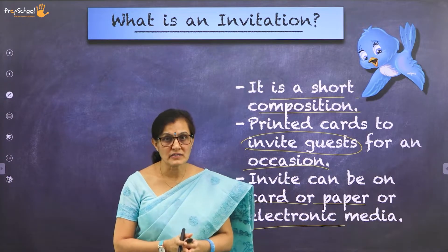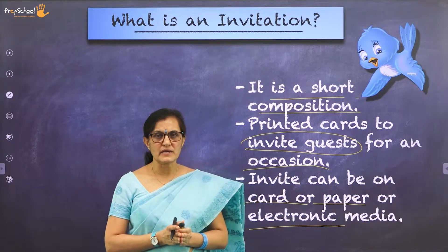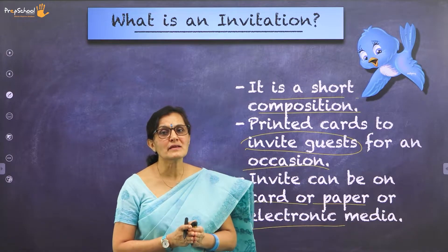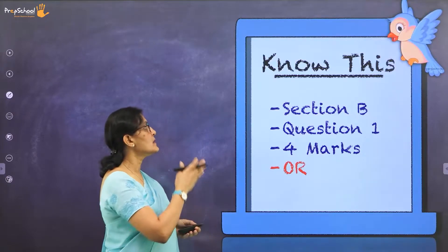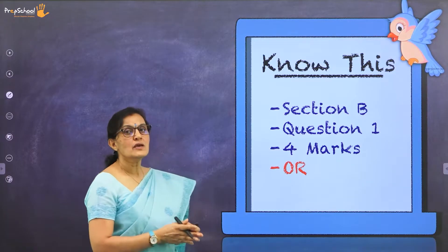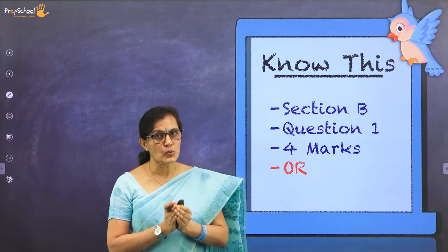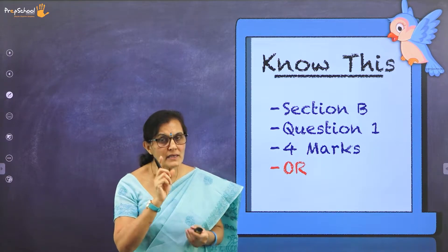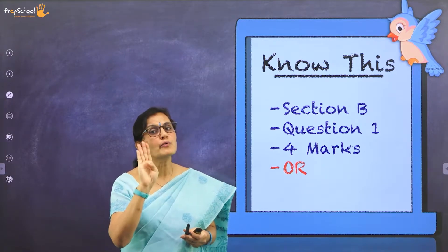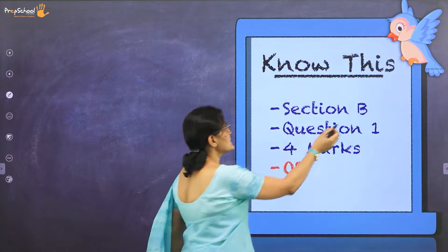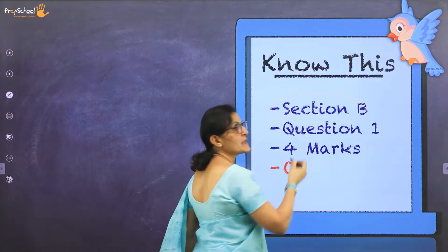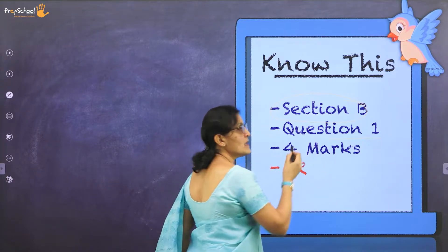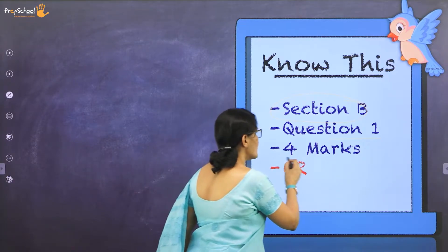Now that you have understood what is an invitation, let's see where the question appears in the question paper. Your invitation and reply question is in Section B. It is question number 1 and it is for 4 marks.